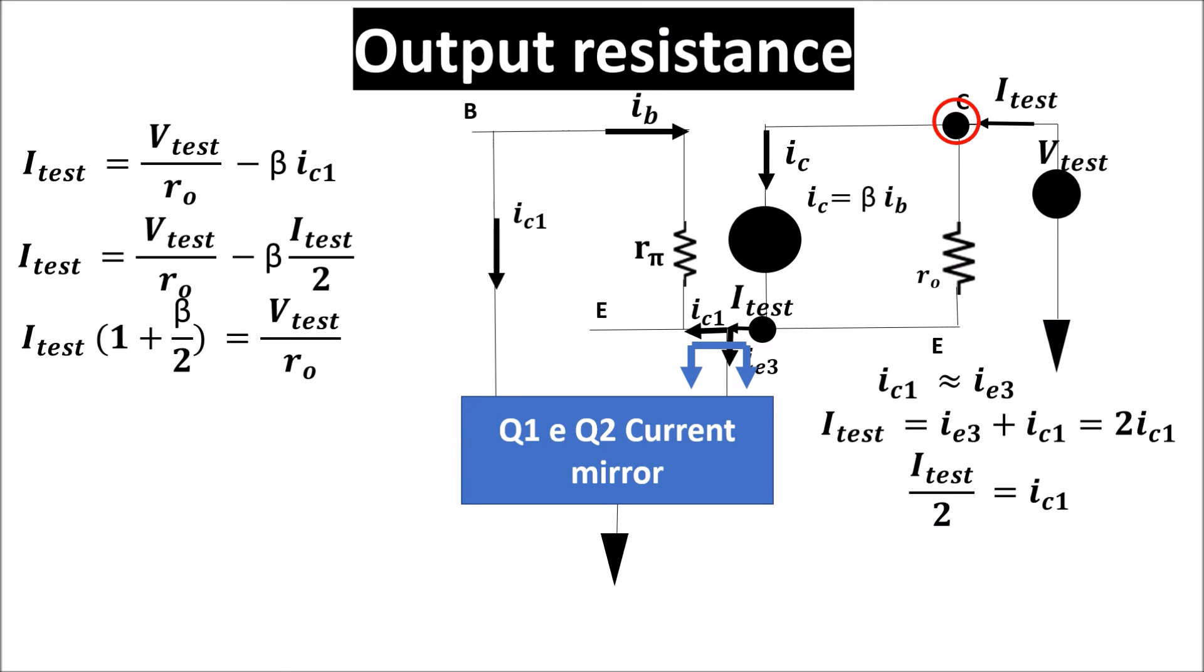And finally, we can say that the output resistance V test divided I test is more or less equal to beta half times little RO, which is much more than the output resistance of the basic configuration, which is simply little RO.